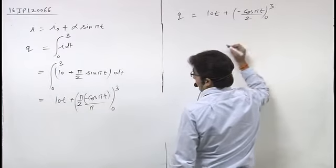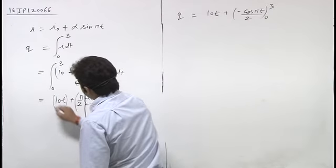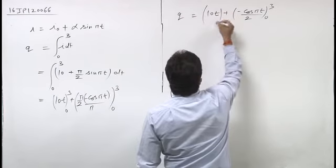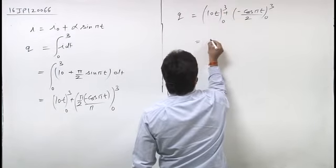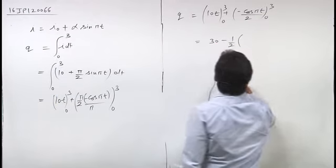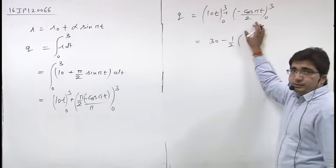From 0 to 3. So 30 minus 1/2 cos πt. Putting t equals 3, we get cos 3π.